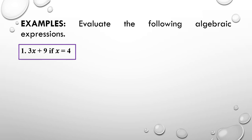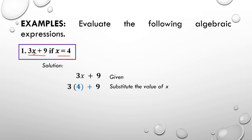For example 1, we are given the algebraic expression 3x plus 9, and we are going to evaluate it if x is 4. For the solution, we copy the given: 3x plus 9. Then we substitute the value of x, writing 3 times 4 plus 9. Applying PEMDAS, we multiply first: 3 times 4 equals 12. Then we add 12 plus 9, and the sum is 21, which is our final answer.